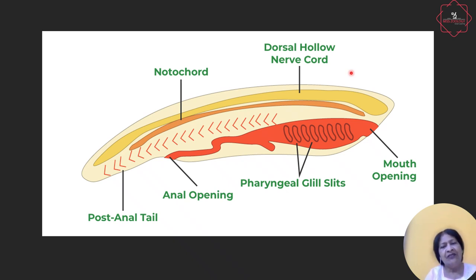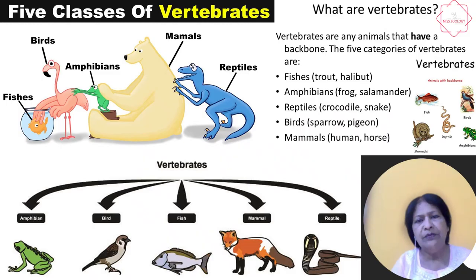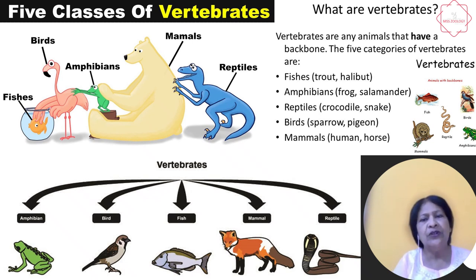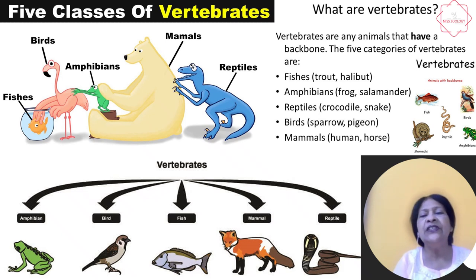Beyond this, there are many more features present in all classes of animals under Chordata. Like they will have a closed circulatory system. Their heart will be on the ventral side of the body. When they possess limbs, they will have two pairs of limbs. Vertebrates, as you see here, each of them have a backbone, and this makes an internal skeleton in their body.